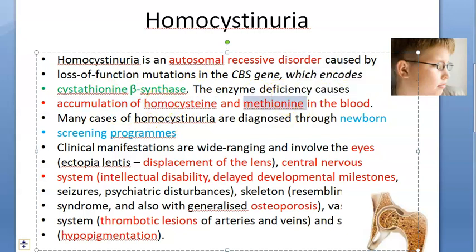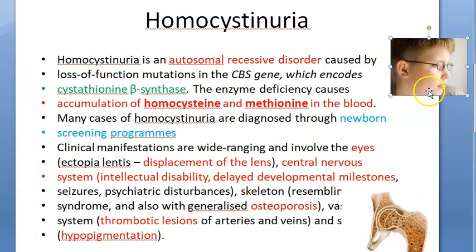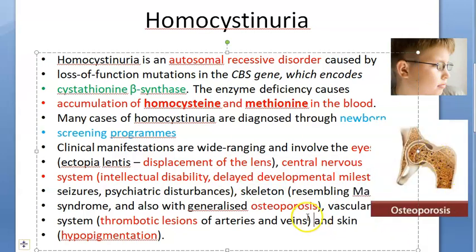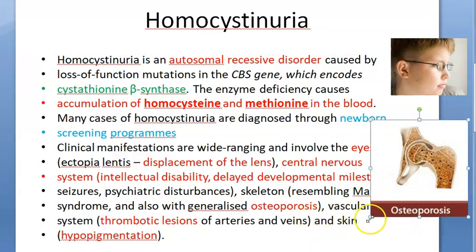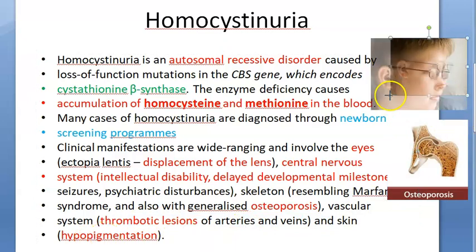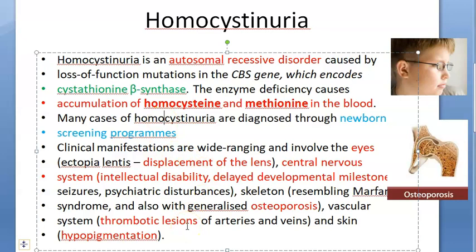There will be accumulation of homocysteine and methionine. It affects many things: their eyes, central nervous system, and skeleton — they can have osteoporosis. They can also have thrombotic lesions in arteries and veins, and hypopigmentation of the skin.